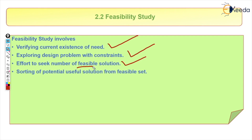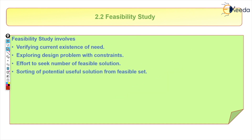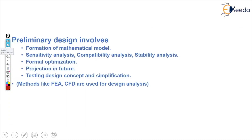The next point in feasibility study is sorting of potentially useful solutions from the feasible set. Suppose we have found four possible solutions; out of those four, we must choose one solution — the right choice.